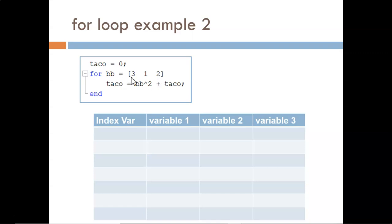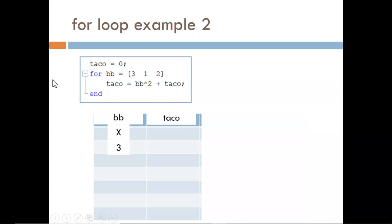Here the index vector is manually entered, and bb will take on these values in order from left to right: 3, then 1, then 2. Now that the tracking table is trimmed to the size we need, we simply need to compute taco each step of the way.